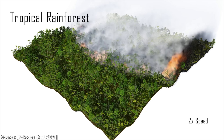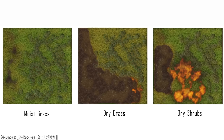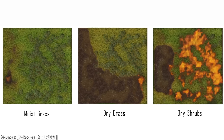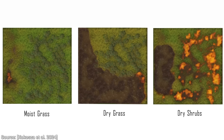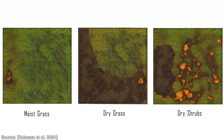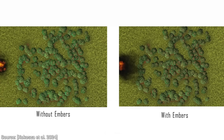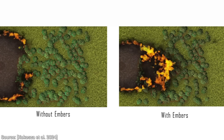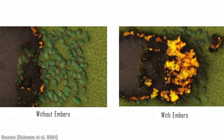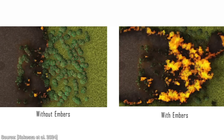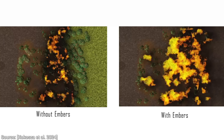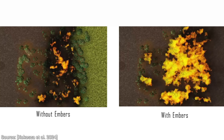It gets even better — it also takes into consideration the moisture content of the grass and reacts accordingly. And now comes the worst part: embers. Embers can be carried away by the wind at speeds faster than a car on the highway, and they ignite new fires wherever they land, making the wildfire even more chaotic and unpredictable.